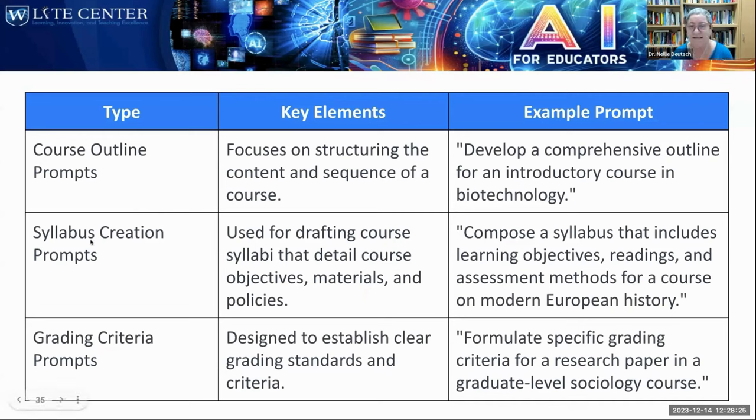Also educational scenario prompts, student engagement prompts, and rubrics prompts. Rubrics can be created with ChatGPT or Google Bard. Course outlines — a lot of my work, my course outline, I base using these AI tools, and it makes things faster. Why spend hours on your course outline or syllabus when you can get help? And then there's grading criteria as well.